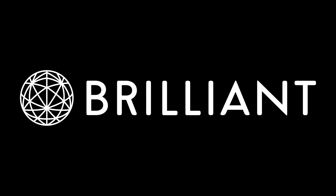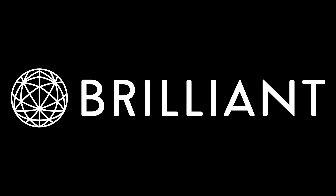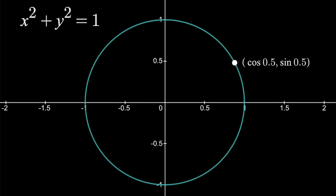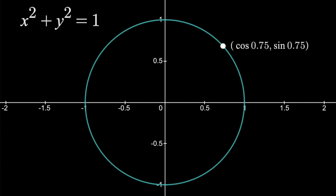As pretty much everyone watching this knows, regular trig goes hand-in-hand with the unit circle, which has an equation of x squared plus y squared equals 1. Plot a point cosine of theta comma sine theta, and that point will guaranteed lie somewhere on that circle. Then as we sweep the input angle, that point simply moves around the circle.